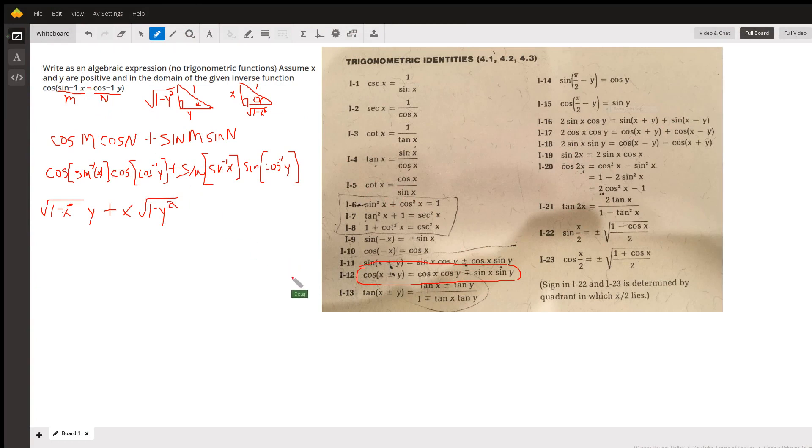And this identity right here, let's just rewrite that in this form right here. So we have the cosine of X minus Y. The minus sign is on the bottom here. That corresponds to a plus here.